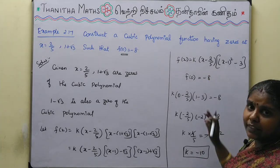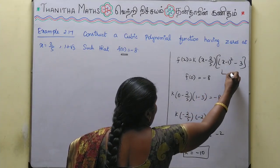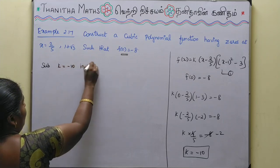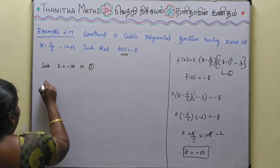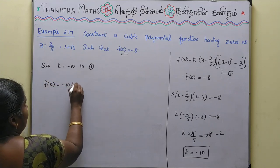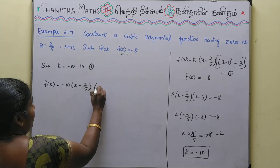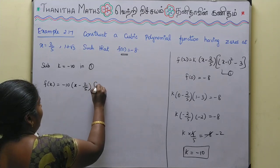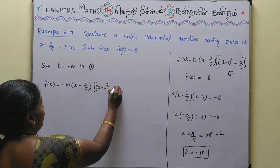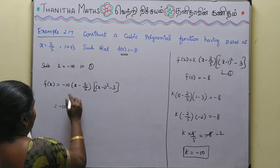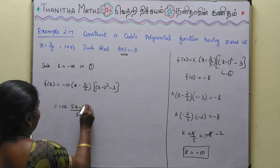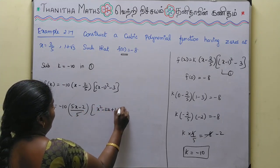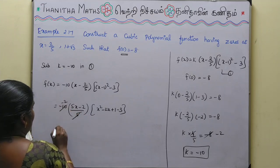Substituting k = -10 into equation 1: f(x) = -10 · (x - 2/5) · [(x-1)² - 3] = -10 · (5x - 2)/5 · (x² - 2x + 1 - 3) = -2(5x - 2)(x² - 2x - 2).